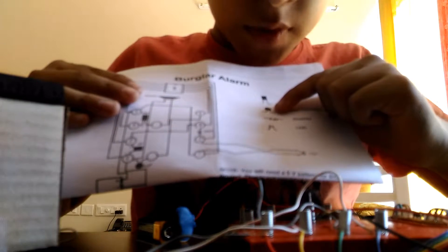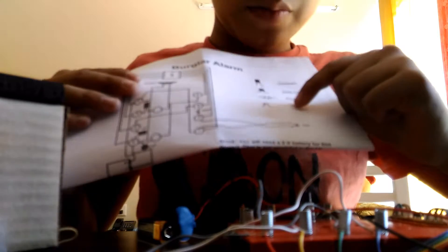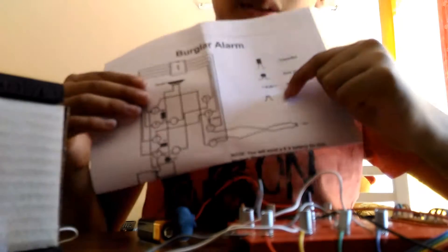Like this one is a capacitor. This one is a disk capacitor. This is a resistor. This is the LDR which is the main component.